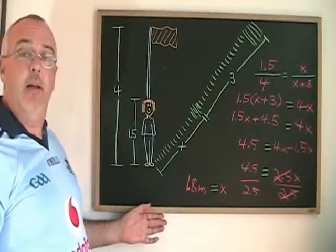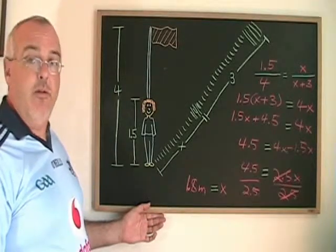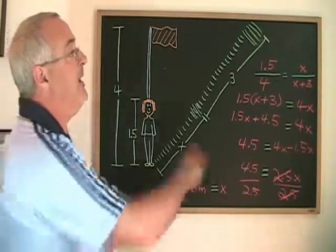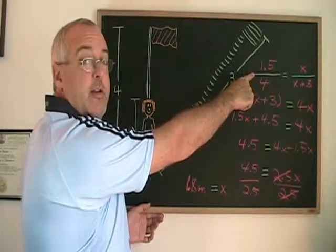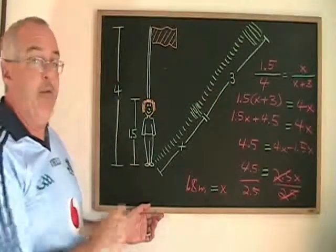But if I am asked to give the proportion that could be used to find the length of Julian's shadow, this equation over here is that proportion. Either way, I have covered the answer.